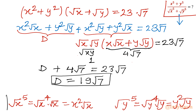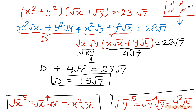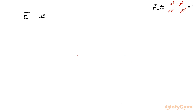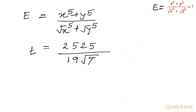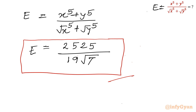The task is done. The numerator x⁵ + y⁵ = 2525 and the denominator is 19√7. So the expression e = (x⁵ + y⁵) / (√(x⁵) + √(y⁵)) = 2525 / (19√7). This is our ultimate and final answer for the rational and radical expression challenge. I hope you like this video — thank you so much for watching. Don't forget to like, share, and subscribe. Bye bye!